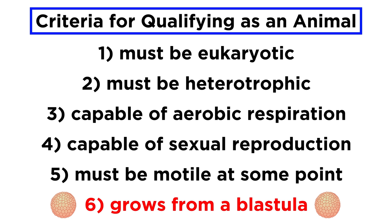And number six, animals grow from a hollow sphere of cells known as a blastula. This last one is a little more complex than the others, but a blastula is essentially an embryo in a very early stage of development, when it is pretty much just a hollow ball of cells. We discussed this when introducing the evolution of multicellular life in the biology series, and animals start off as fertilized zygotes that grow into blastulas.